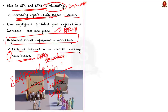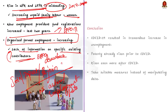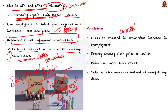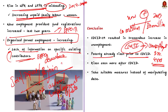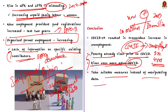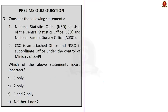To conclude, according to the author, COVID-19 resulted in a tremendous increase in unemployment of at least 10 million people, on top of the 30 million already unemployed in 2019. This occurred even as CMIE (Centre for Monitoring Indian Economy Private Limited) reported that the unemployment rate dropped from nearly 43% in 2016 to 37% in just four years. Poverty had already risen prior to COVID and rose even more after COVID. The author argues we must accept this reality and take suitable measures to achieve actual increases in employment, instead of manipulating data.